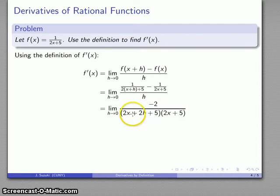And this expression here, the only thing that happens, is that this middle term here goes to zero. So this expression here goes to 2x + 5. And so the limit as h goes to zero of my difference quotient, minus 2 over 2x + 5 times 2x + 5.